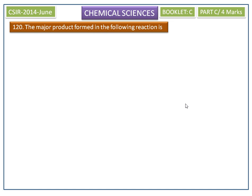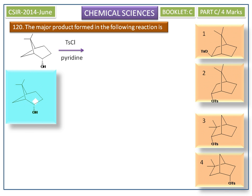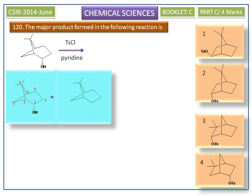The major product formed in the following reaction is — the options are shown here. The reactant, 6,6-dimethyl-bicyclo-3,1,1-heptane-2-ol, is a highly strained molecule. Here we can see the axial bonds and equatorial bonds.